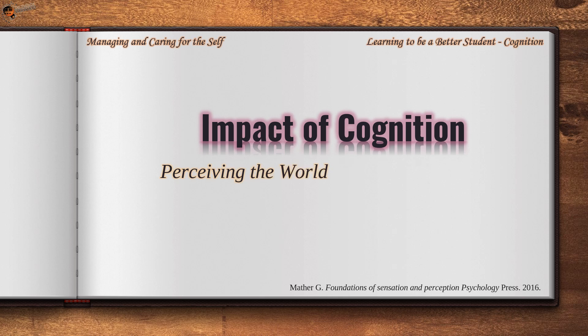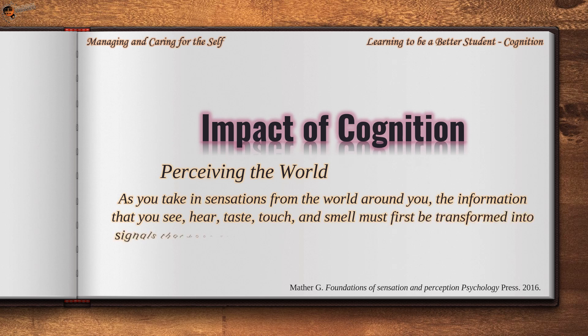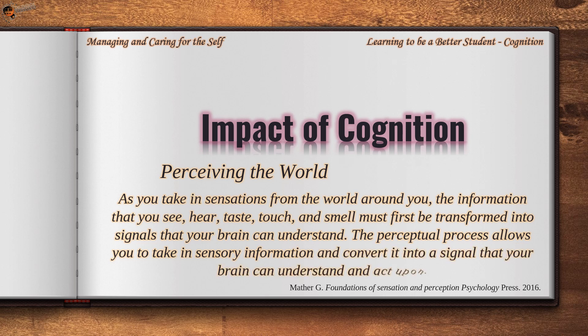As you take in sensations from the world around you, the information that you see, hear, taste, touch, and smell must first be transformed into signals that your brain can understand. The perceptual process allows you to take in sensory information and convert it into a signal that your brain can understand and act upon.